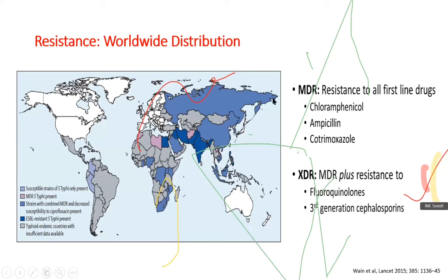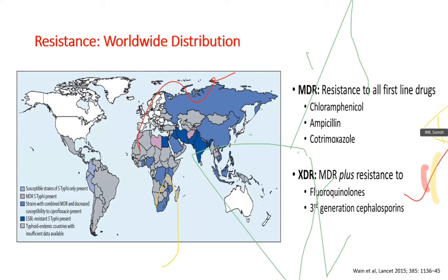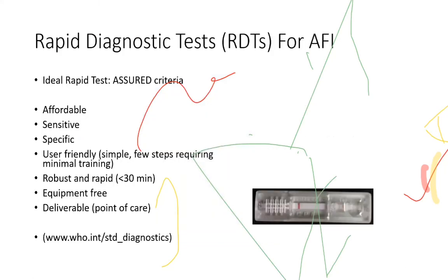Multidrug-resistant salmonella includes resistance to all first-line drugs: chloramphenicol, ampicillin, and cotrimoxazole. Extensively drug-resistant salmonella includes multidrug resistance plus resistance to fluoroquinolones and third-generation cephalosporins. There has been an outbreak of XDR seen in Pakistan, and similarly small pockets were also seen in Mohali and Chandigarh. It is high time we consider enteric fever as one of the important diseases.